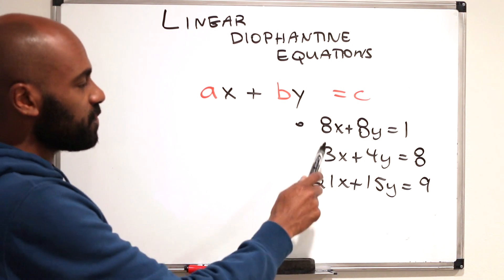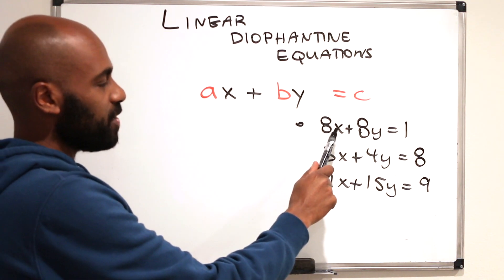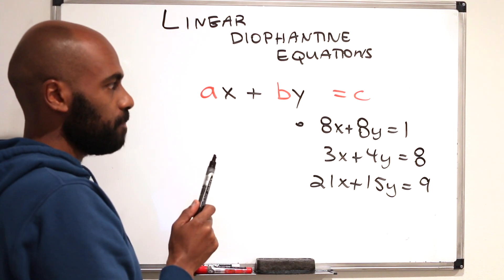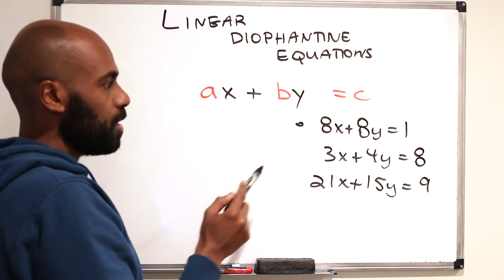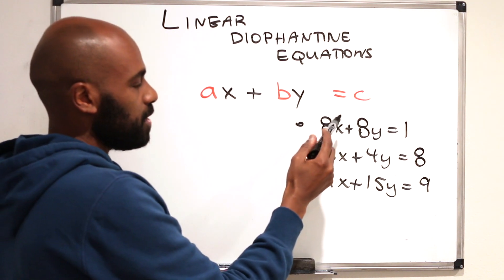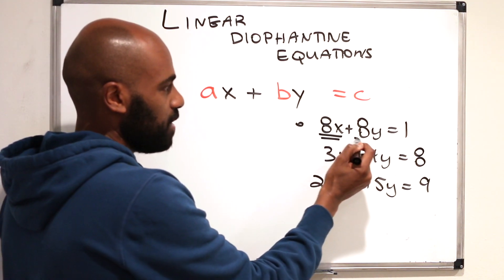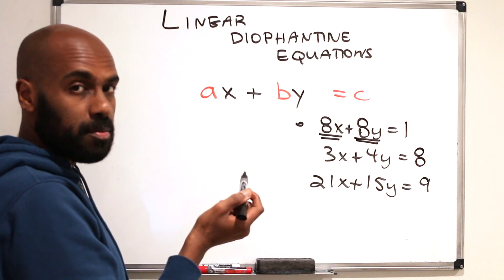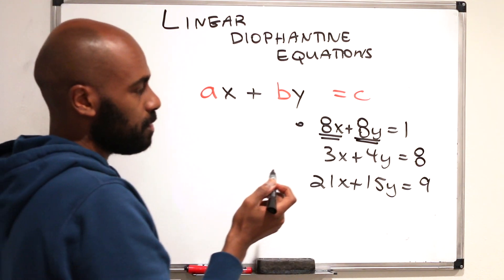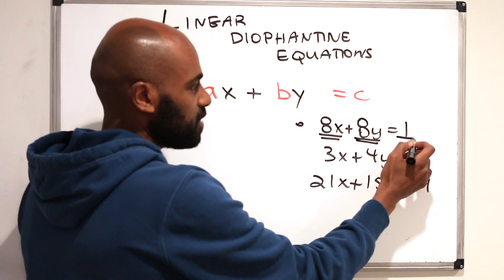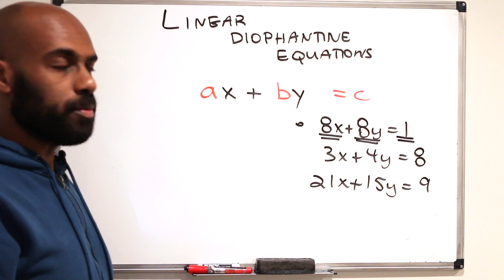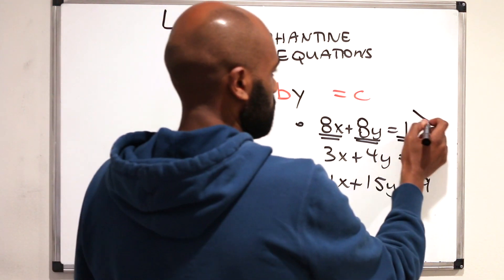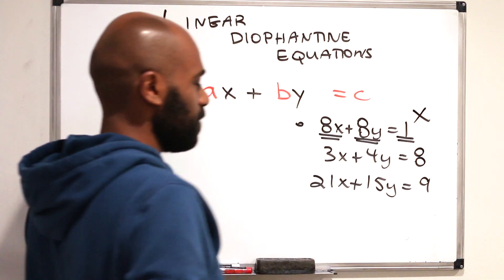Let's look at this first example. Do we have integer solutions to this equation at all? Well, if we did, then this term would be a multiple of eight and this term would be a multiple of eight, so their sum is a multiple of eight. But the right-hand side is not a multiple of eight, so there's no solution whatsoever.